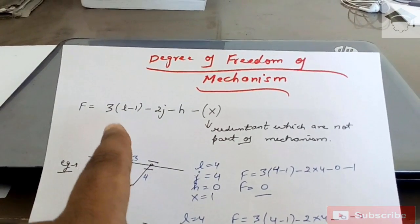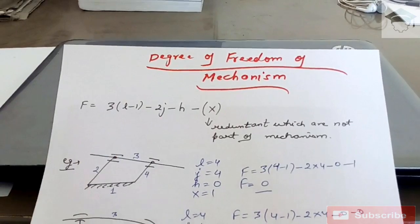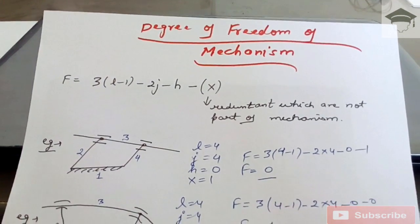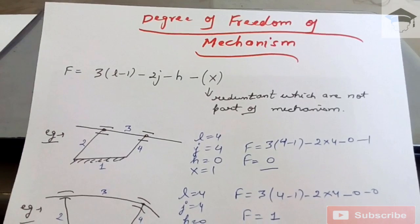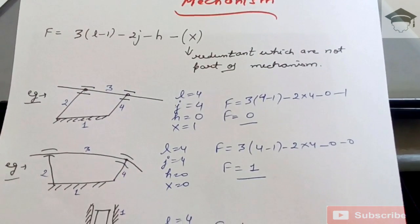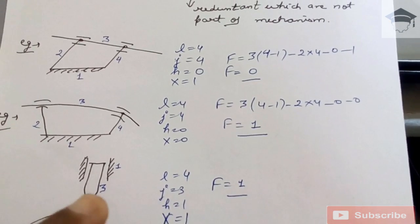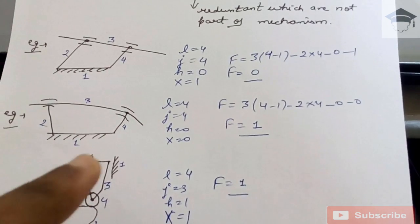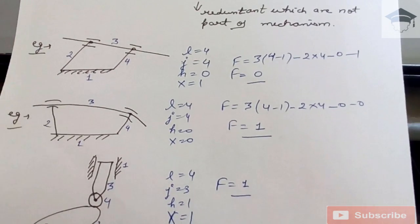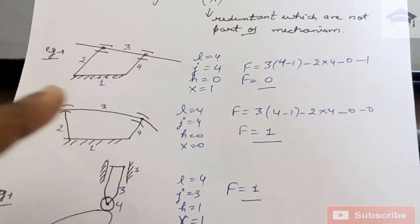I suppose you have watched my previous video on the Kutzberg equation and Grubler's criteria — if not, please watch that first. Now, Example 2: here also four links, but link three is curved and cannot move independently, so there is no independent translation motion for link three. Therefore l = 4, j = 4, h = 0, and x = 0. Substituting gives degree of freedom equal to one.